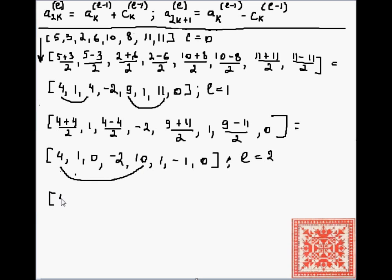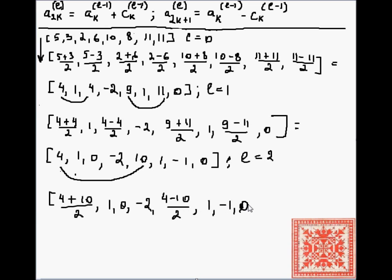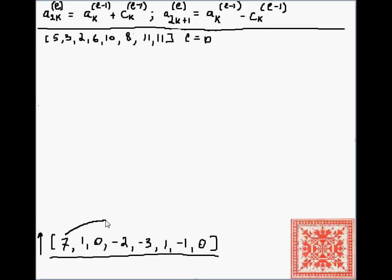At level three the gap increases to four, so we compute (4+10)/2=7 as the average, and 1, 0, −2 carry over, then (4−10)/2=−3 as the wavelet coefficient at the lowest frequency level. That gives the array [7, 1, 0, −2, −3, 1, −1, 0] — the sample converted by the in-place fast Haar wavelet transform.